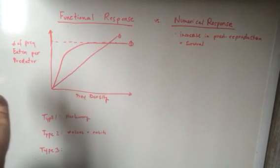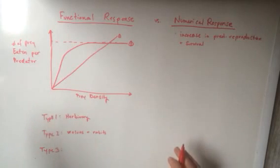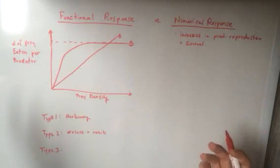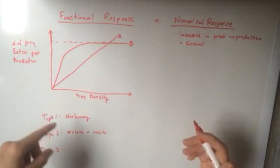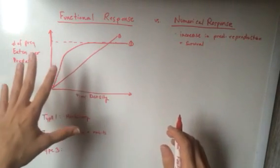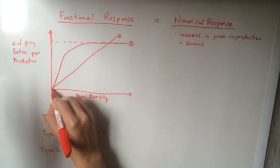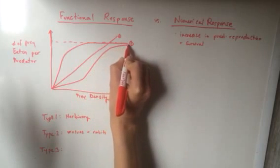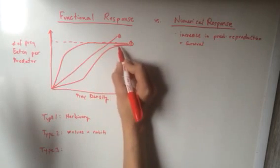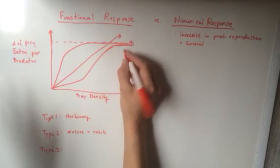We have the last functional response, which is type 3. Type 3 is similar to type 2, but predator response to prey is low at low prey density. So it looks more like this on a graph, and then it begins to also plateau at a certain point.